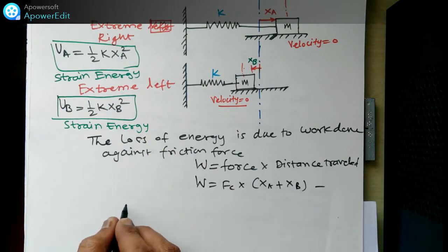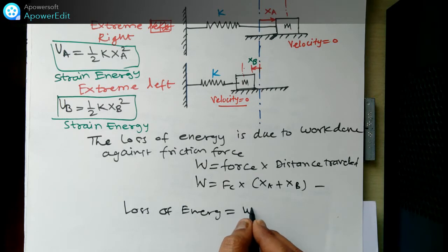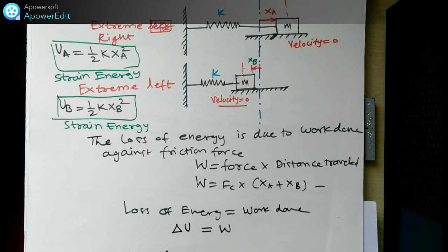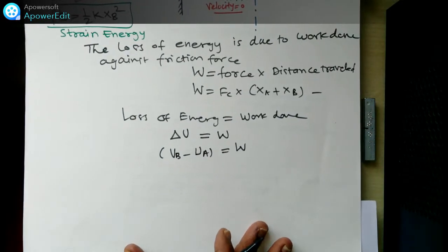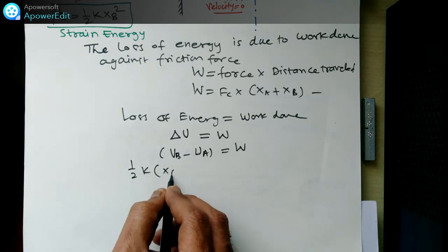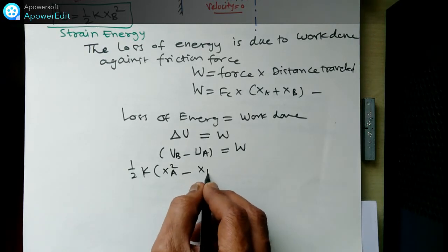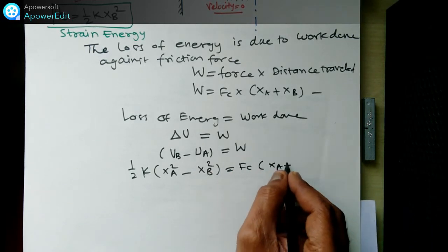From the work-done equation and the strain energy equations, the loss of energy — delta U — equals Ub minus Ua, which equals W. Writing this out: ½k(Xa²) minus ½k(Xb²) = Fc(Xa + Xb).